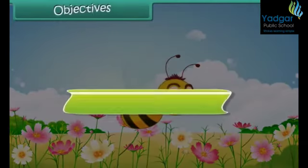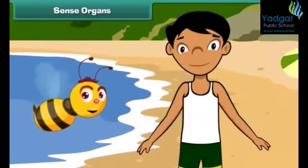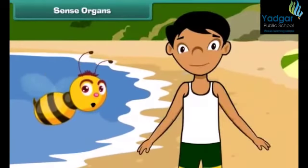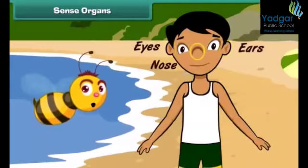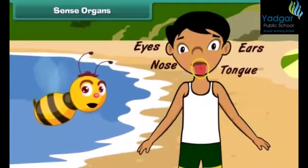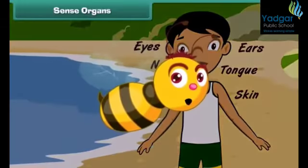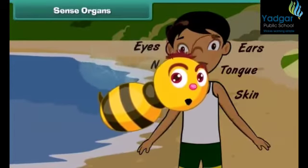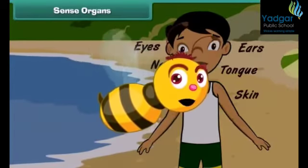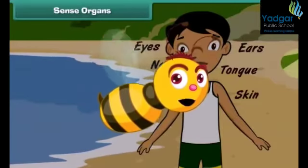Each organ has its own specific functions. The eyes, ears, nose, tongue and skin are the five sense organs of our body. These sense organs help us to feel different things around us. Let us learn about them.